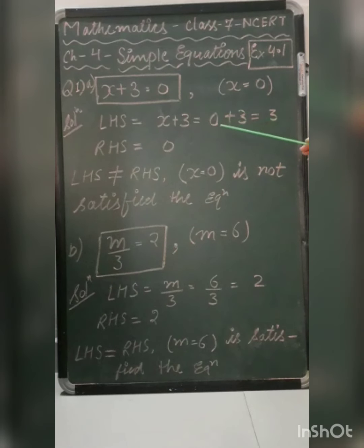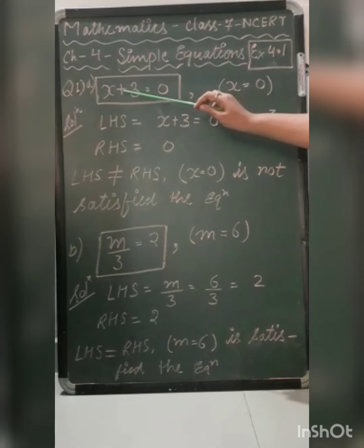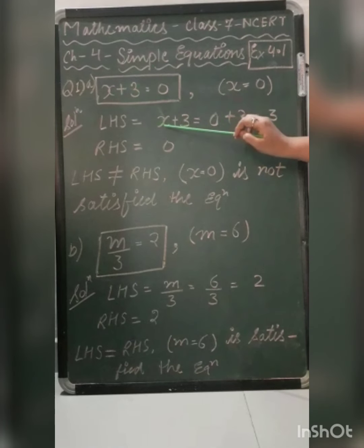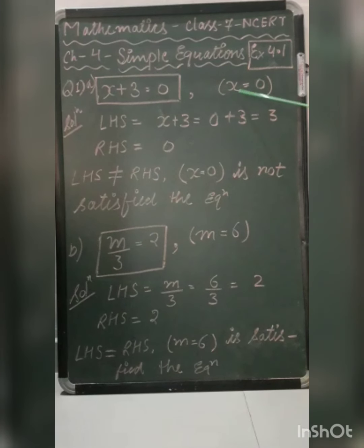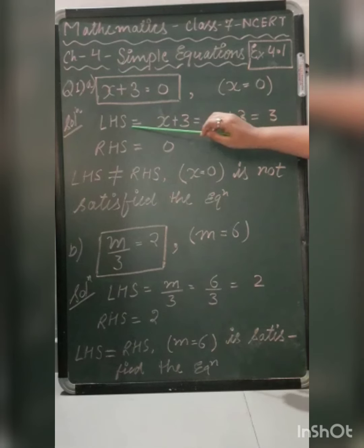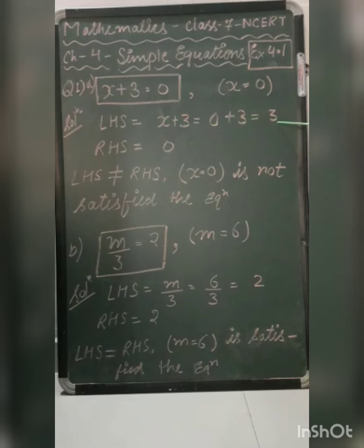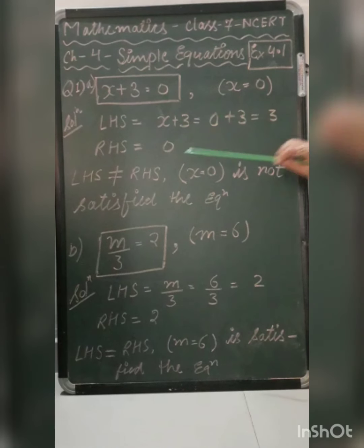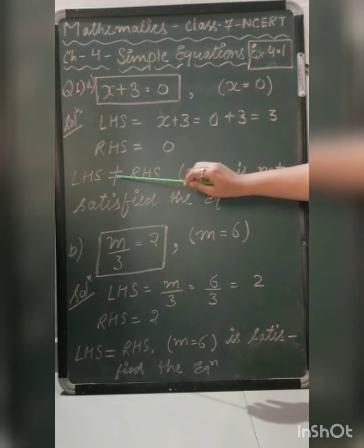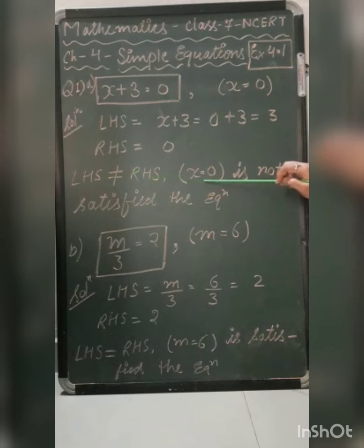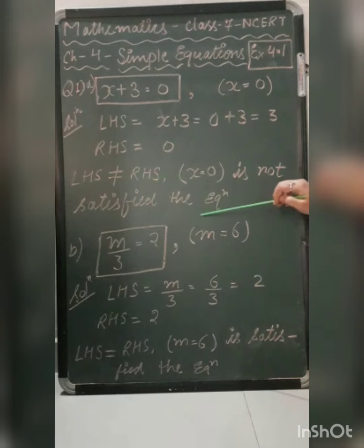We will start the solution from the left hand side. The left hand side part of this equation is x plus 3. In place of x, we put the value 0: 0 plus 3 equals 3. So the left hand side value is 3, and the right hand side is 0. Left hand side is not equal to right hand side, so x equal to 0 does not satisfy the equation.